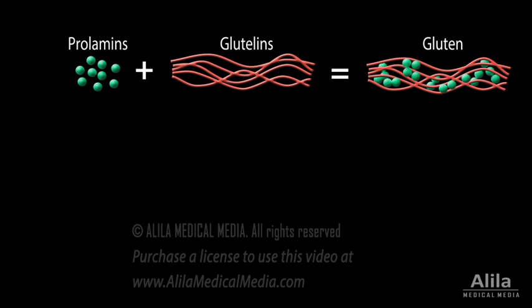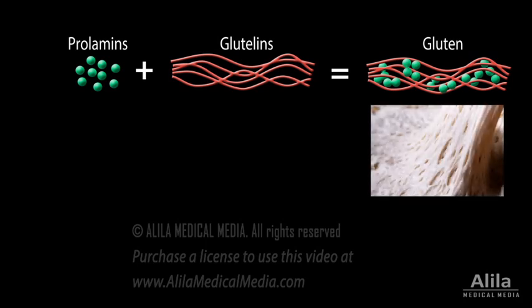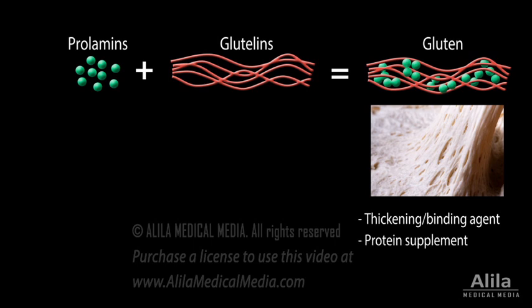Gluten has unique viscosity properties that give the dough its elasticity. Because of its low costs, wheat gluten is widely used as a thickening or binding agent, and to fortify low protein food products.